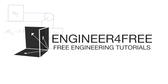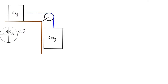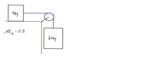Welcome back. This kinetic pulley example problem has a friction surface between a 9 kilogram mass and the floor, with a kinetic coefficient of friction equal to 0.5. We want to figure out the acceleration of each block. The acceleration of the 9 kilogram block is going in one direction and the acceleration of the 20 kilogram block is going in the other direction, and we'll take those as positive.